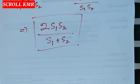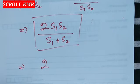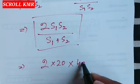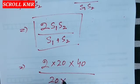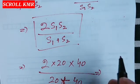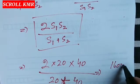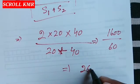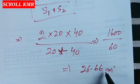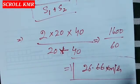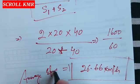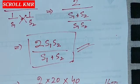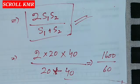بس آپ کو values دینی ہیں: s1 = 20 km/h (گھر سے school تک) اور s2 = 40 km/h (واپسی پر)۔ Average speed = 2 × 20 × 40 / (20 + 40) = 1600 / 60 ≈ 26.66 km/h۔ یہ ہے ہماری average speed۔ اگر آپ اس formula کو یاد رکھیں گے تو entrance exam میں ایسا کوئی بھی question آئے تو جلدی answer نکلے گا۔ Thank you۔